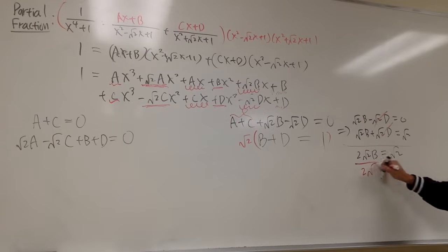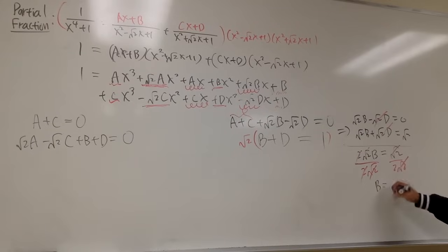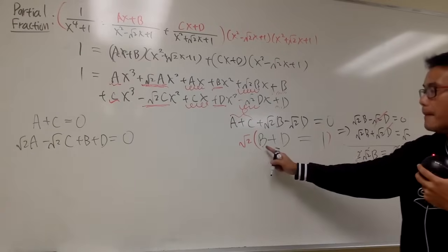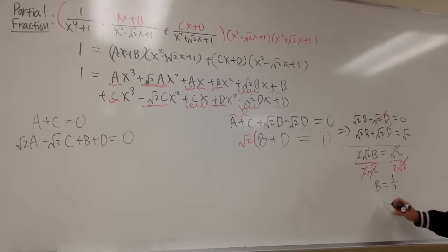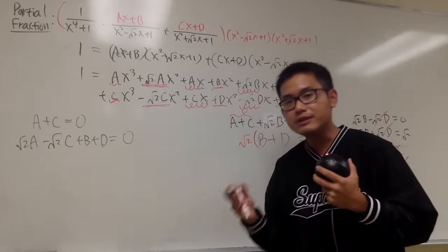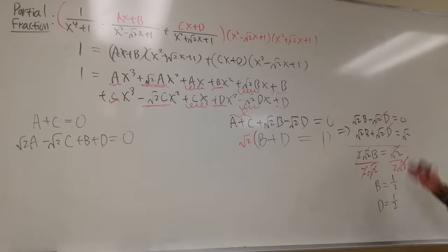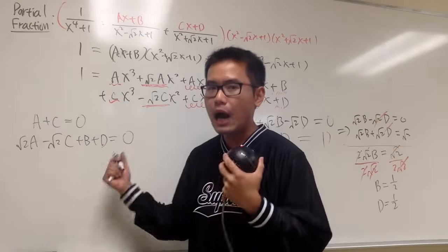Dividing both sides by 2 square root of 2, b equals 1 half. Looking back at b plus d equals 1, since b equals 1 half, d must also be 1 half. Now let's solve for a and c. Multiplying the a plus c equation by square root of 2 and combining with the x-coefficient equation, 2 square root of 2a equals negative 1.